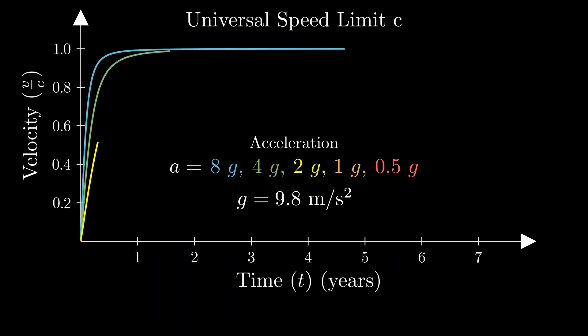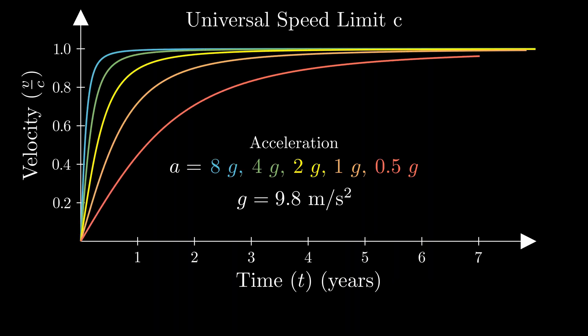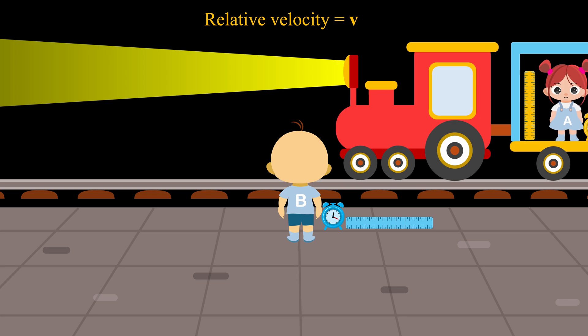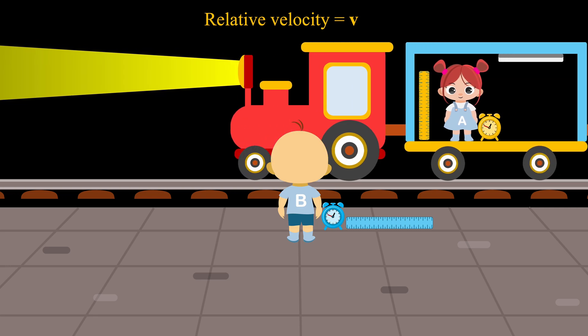To understand this ultimate speed limit, we turn to Einstein's special theory of relativity. It rests on two key ideas that is explained here with two observers, Alice and Bob.